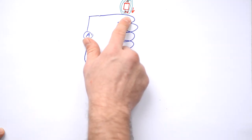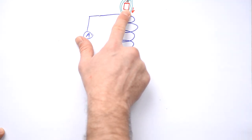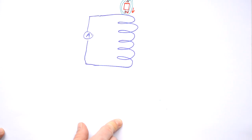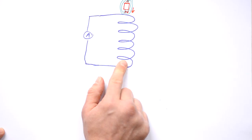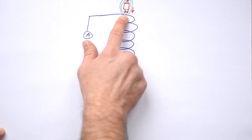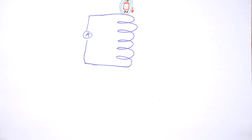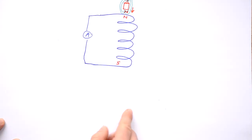If a south pole were induced at the top, the magnet would accelerate faster and faster — effectively getting energy for nothing. But we know due to Lenz's law that whatever current is induced, it will try to stop the change that caused it. So it makes more sense that if the north pole comes in, we actually have a north pole induced at the top, and therefore a south pole at the bottom.